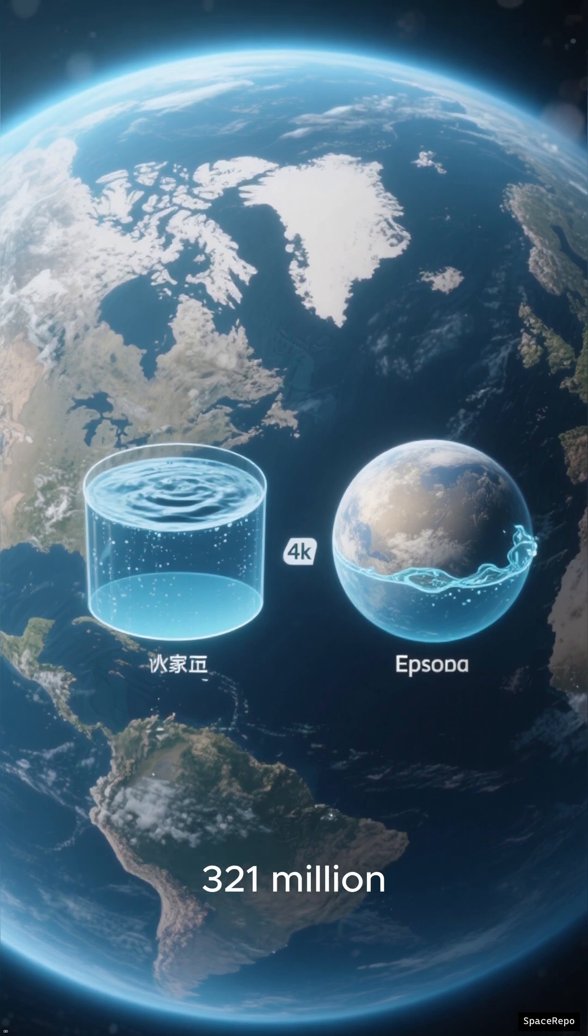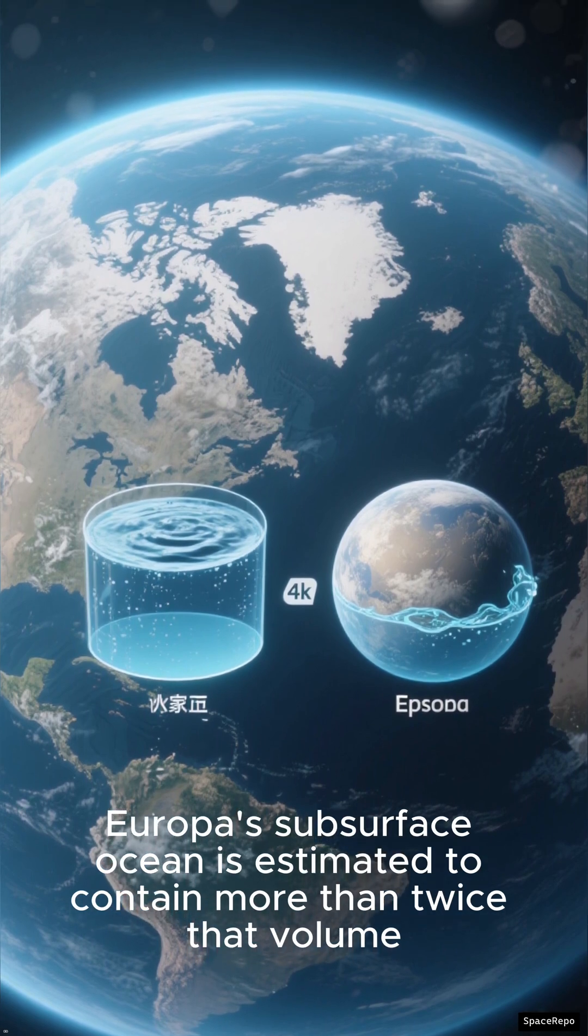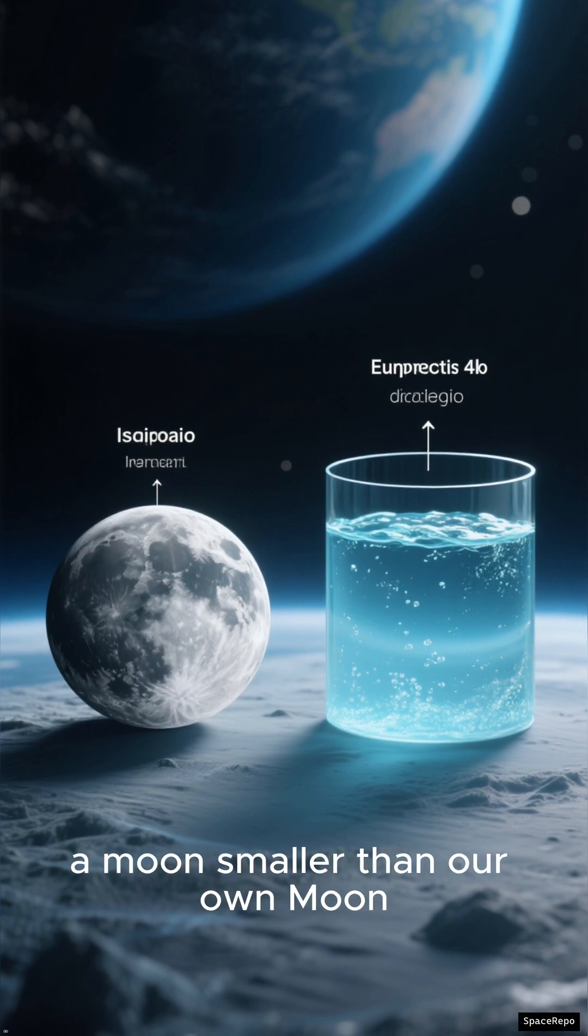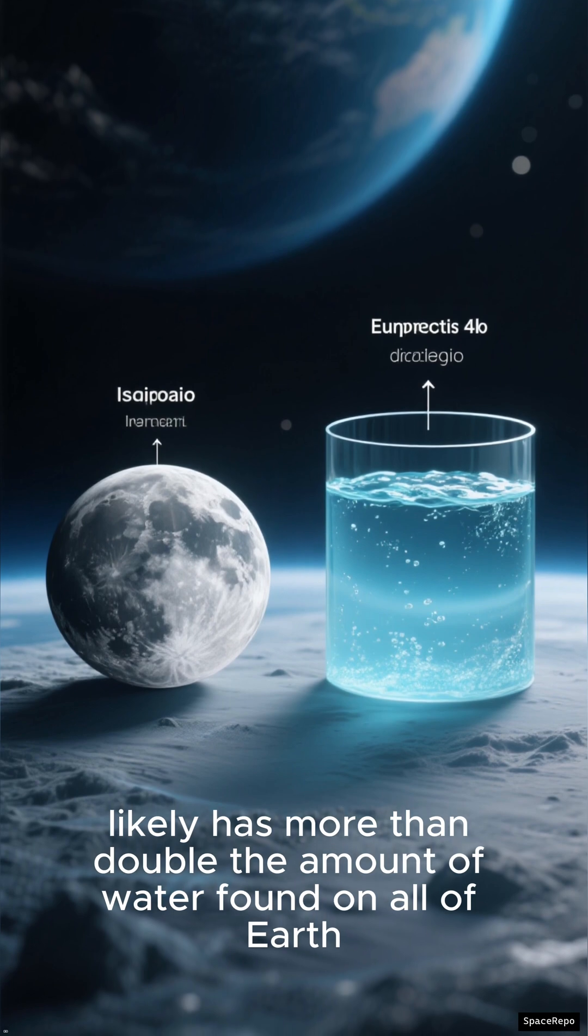Europa's subsurface ocean is estimated to contain more than twice that volume. That's right—a moon smaller than our own Moon likely has more than double the amount of water found on all of Earth.